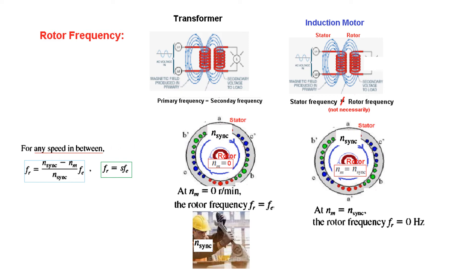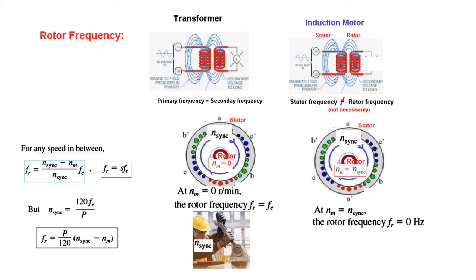For any speed in between, the rotor frequency is given by: F-r equals (N-sync minus N-m) divided by N-sync, multiplied by F-e, where F-e is the stator or supply frequency. This can also be written as F-r equals s times F-e, where s is the slip. Additionally, since any speed is given by 120·F-e / P, we can derive another formula: F-r equals P divided by 120, multiplied by (N-sync minus N-m). We will use this formula in the problem solving.